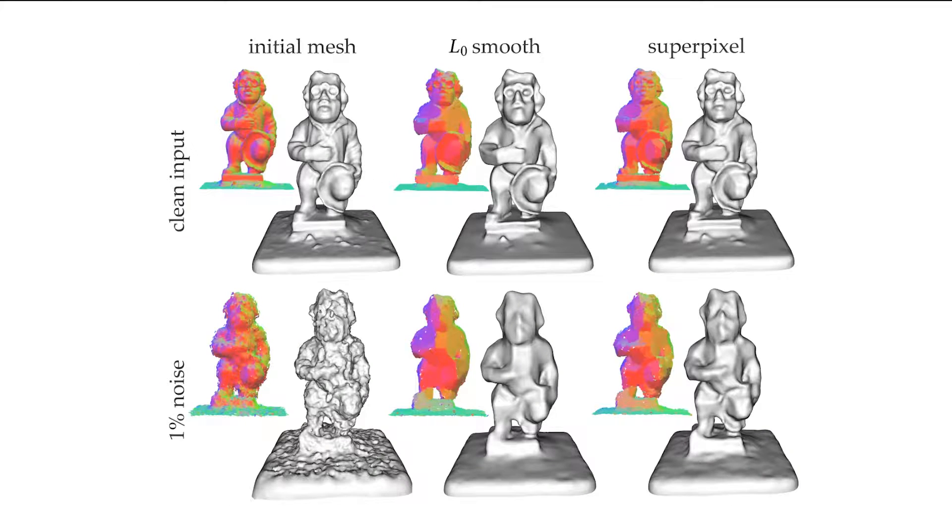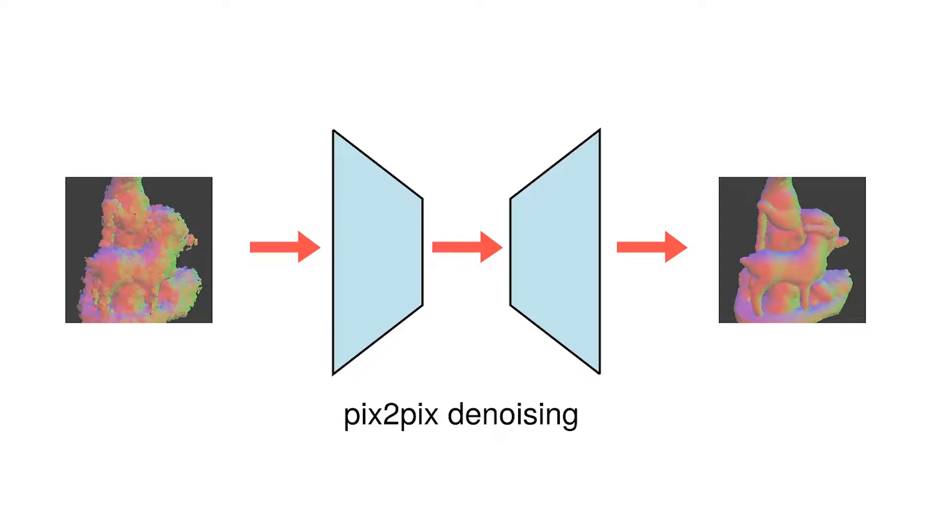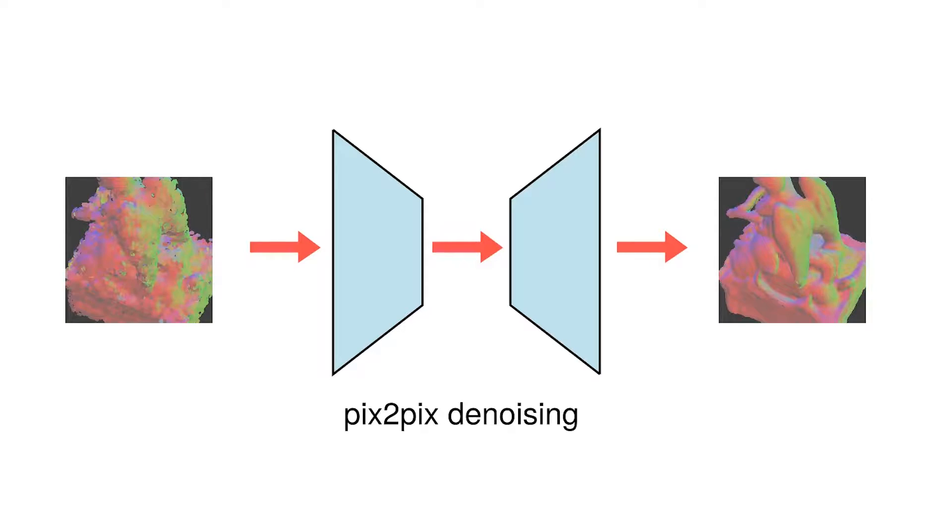Our method can take advantage of existing image processing methods, such as L0 smoothing and superpixels. We also trained an image-to-image translation network for geometric noise removal using synthetic training data.